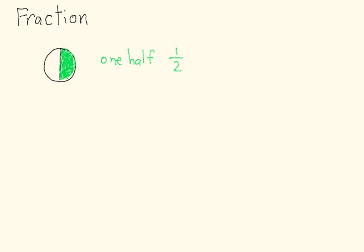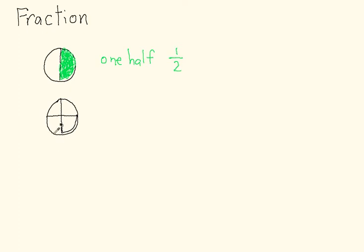Now let's talk about some other terminology. Let's say I took this same circle and I cut it in half twice. Here's another circle the same size as the previous one. I divided it into two pieces, and then I divided it into two again, so now I've got four pieces — all equal size. I've divided the circle into four equal parts.